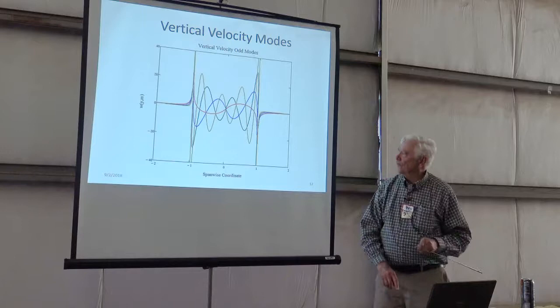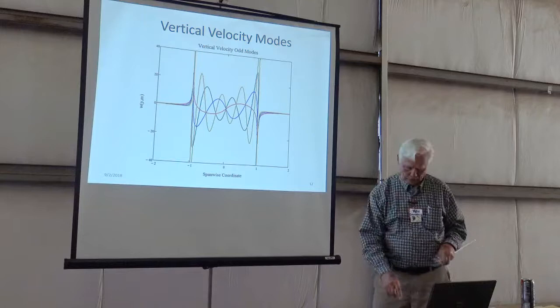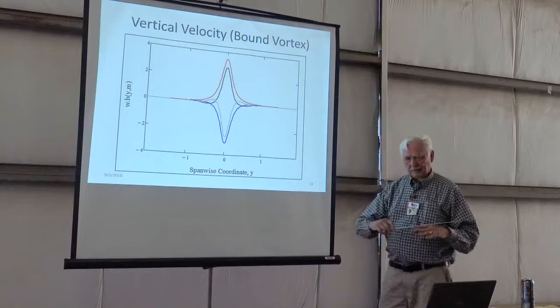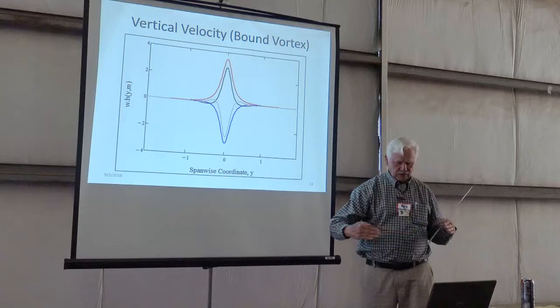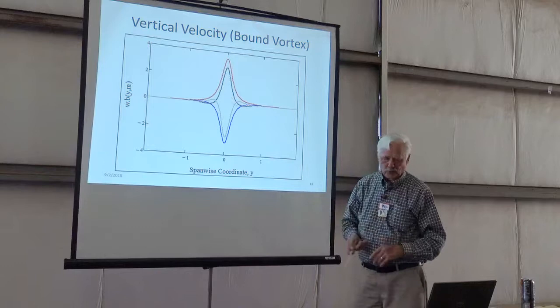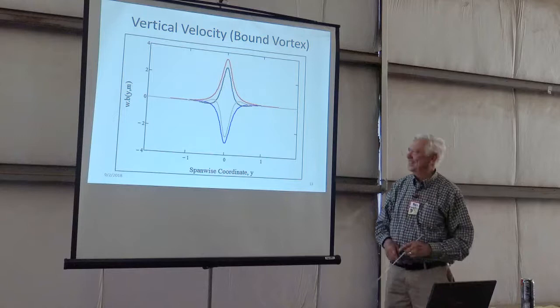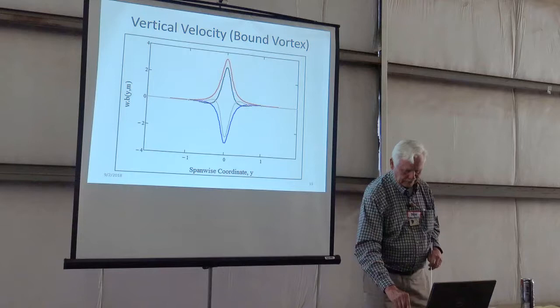And the same for the asymmetric modes. Okay, the bound vortex with my little hyperbola smoothing gives me this kind of distribution for the four different modes. And I'm still working on that too. But I haven't seen this before.